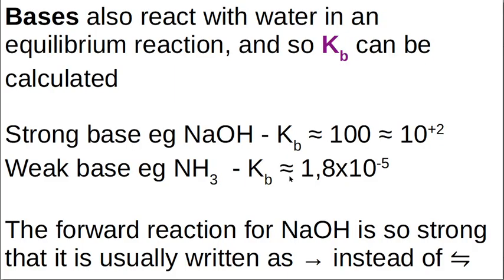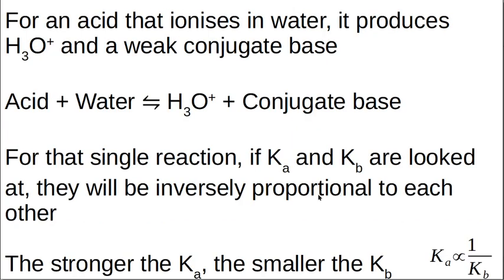The same approach applies to bases — Kb is the equilibrium constant for a base: concentration of products over concentration of reactants. For a strong base like sodium hydroxide, Kb is around 100 or 10². For a weak base like ammonia, Kb is 1.8×10⁻⁵. The concentration of hydroxide ions when you put ammonia into water is very very low.